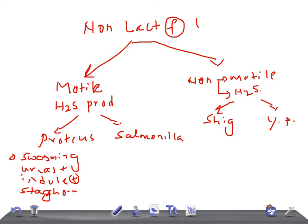In the non-motile, non-H2S producing group, we have Shigella and Yersinia pestis. Shiga toxin is very important — it is a neurotoxin, a cytotoxin, and an enterotoxin. It causes enterocolitis, so the patient will have bloody diarrhea. Whenever there is bloody diarrhea, remember Shigella. Treatment is maintenance of hydration and electrolytes; azithromycin or fluoroquinolones can be used.